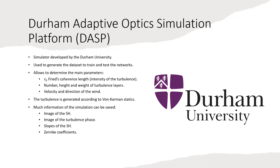To train and test the networks, we need large amounts of data. In the training process, we need the information received by the measurements of the system and the desired Zernike coefficients as output. Using simulated data is ideal for training, since it allows us to know perfectly the turbulence of each moment, unlike real data. The coefficients given to the network as output are the ideal Zernike coefficients.